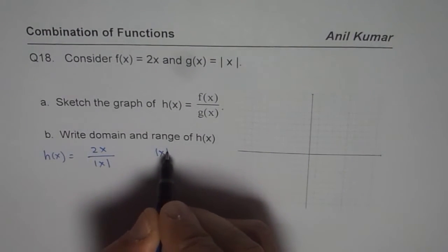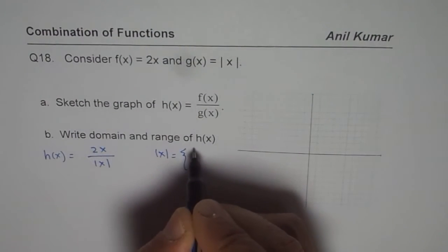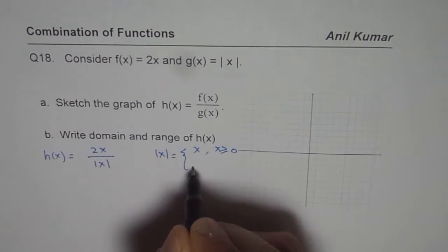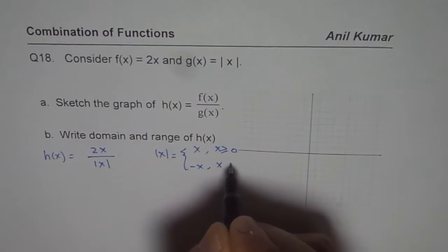Now as you know, absolute x is defined as equal to x when x is greater than or equal to 0, and minus x if x is less than 0.